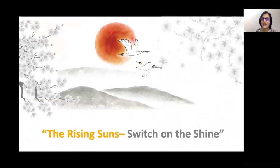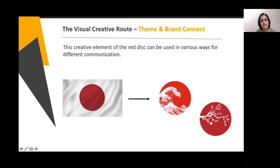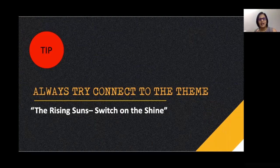Moving on, how did we crack the visual theme? The crimson disc of the Japanese flag was used as the main visual element, based on which all other visuals and collaterals would be created. We used it because it depicted Japan as the land of the rising sun. The invitations, collaterals, and branding — everything was built using the red crimson disc. We must always connect everything back to the central theme: The Rising Sun, Switch On The Shine.